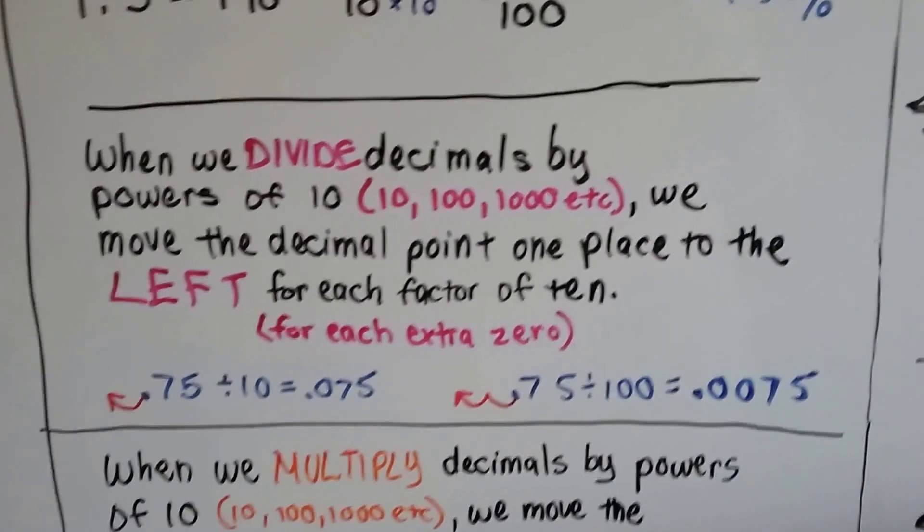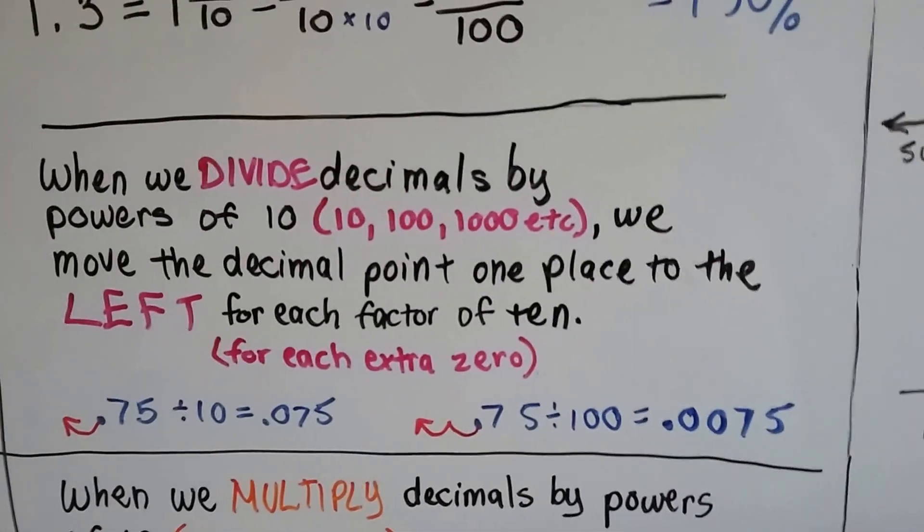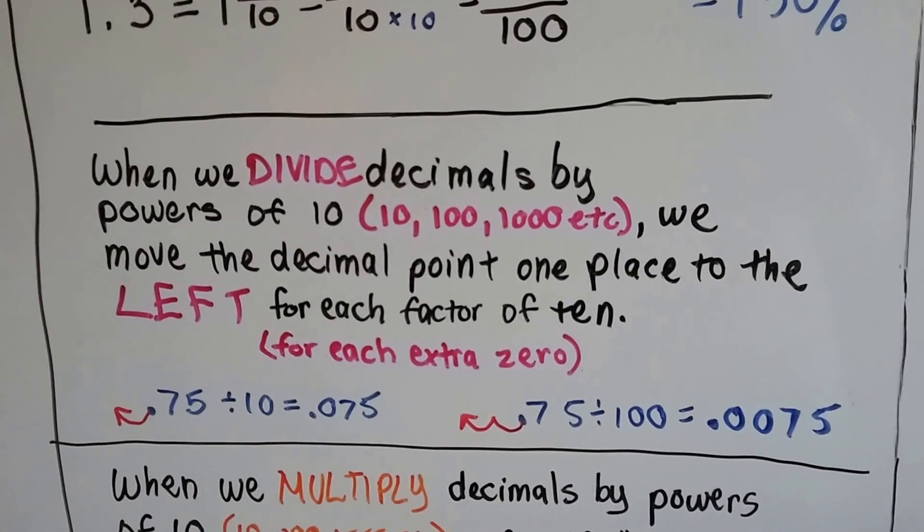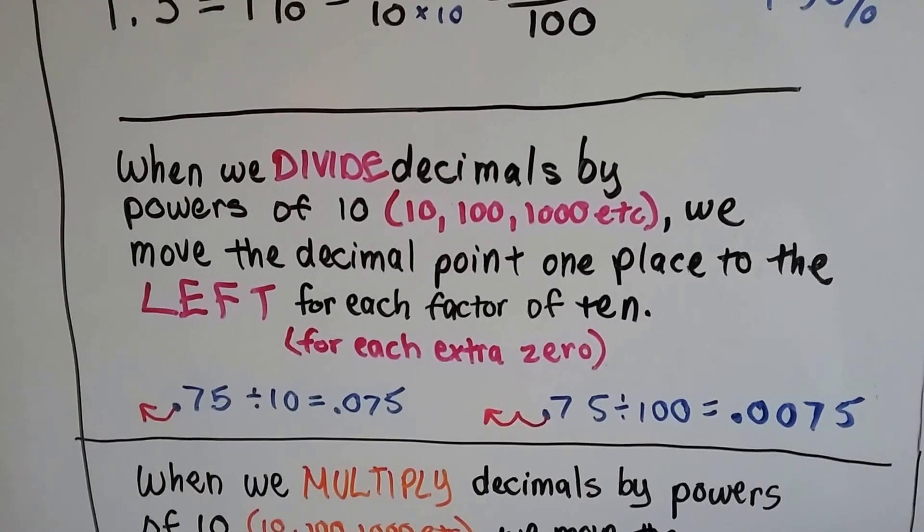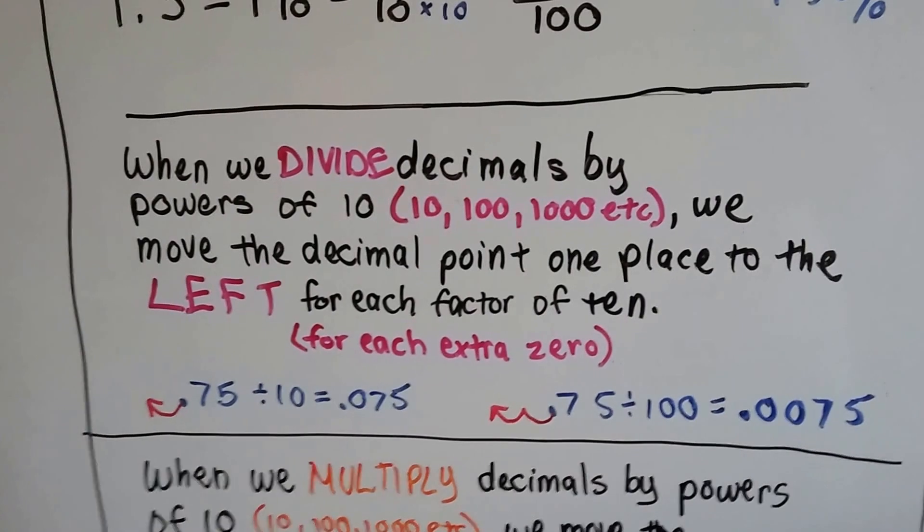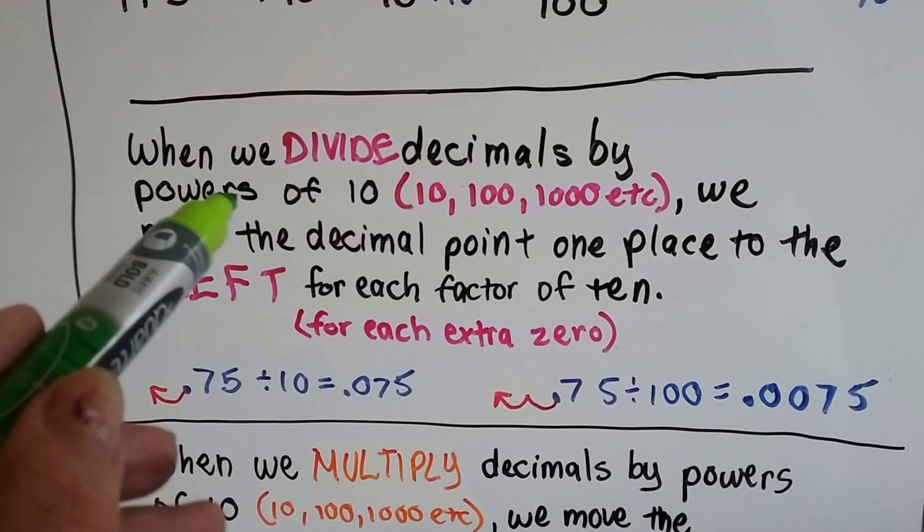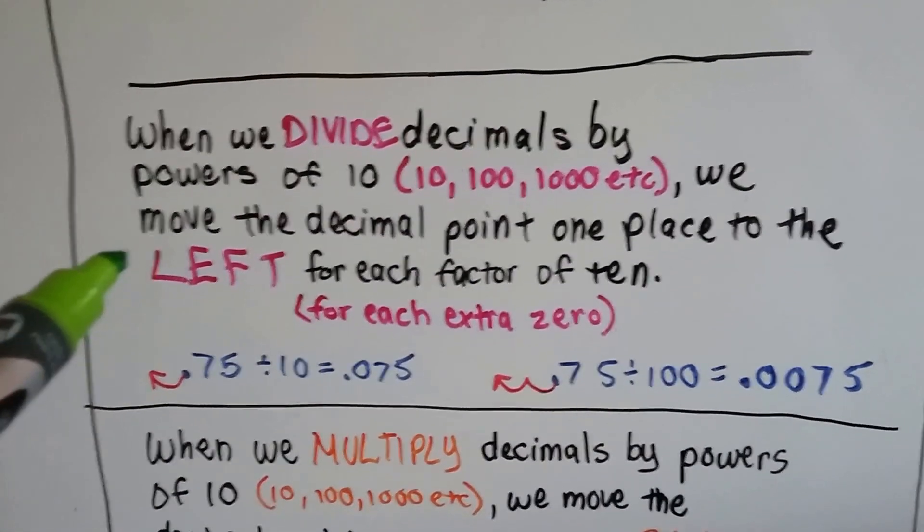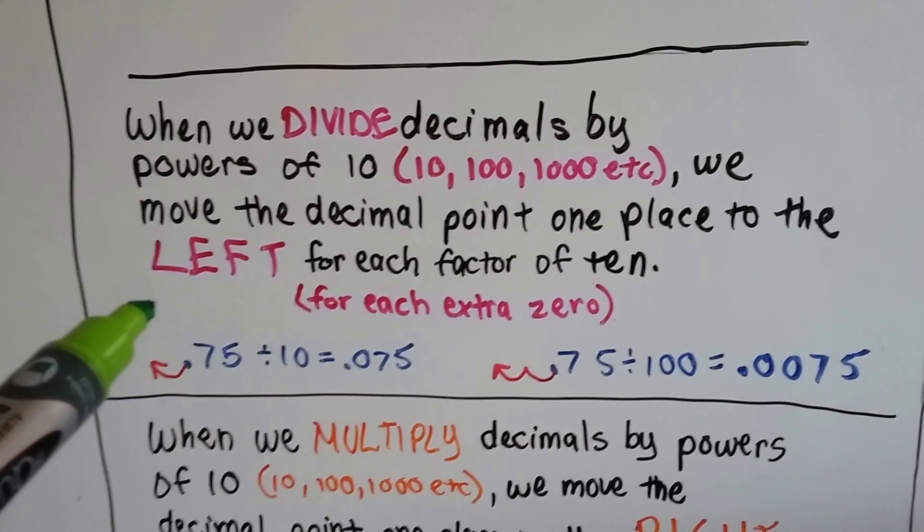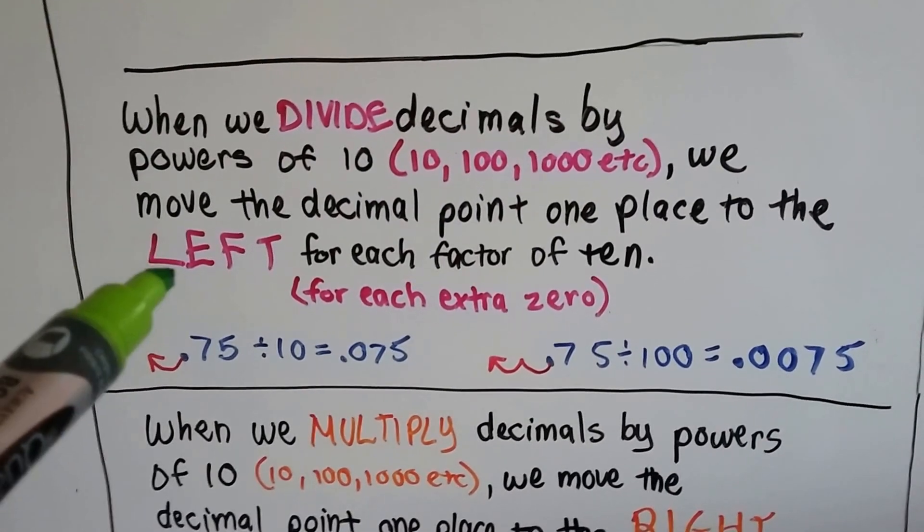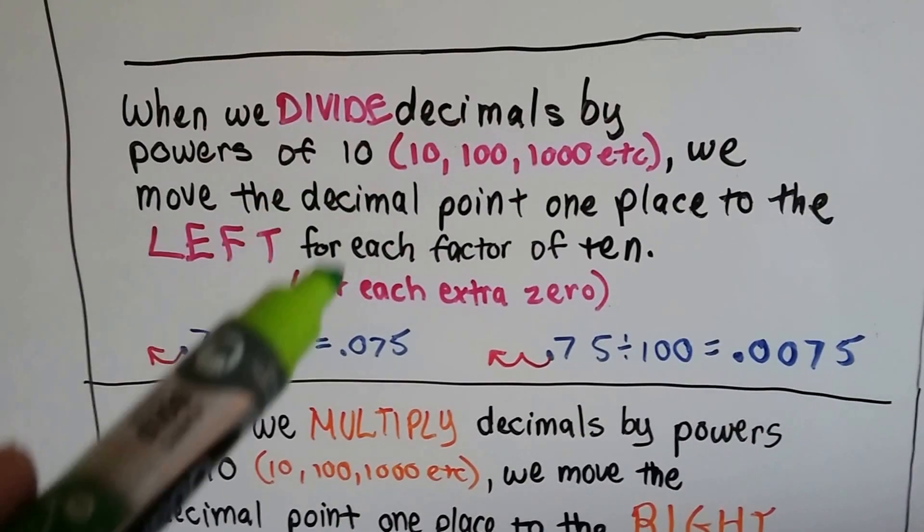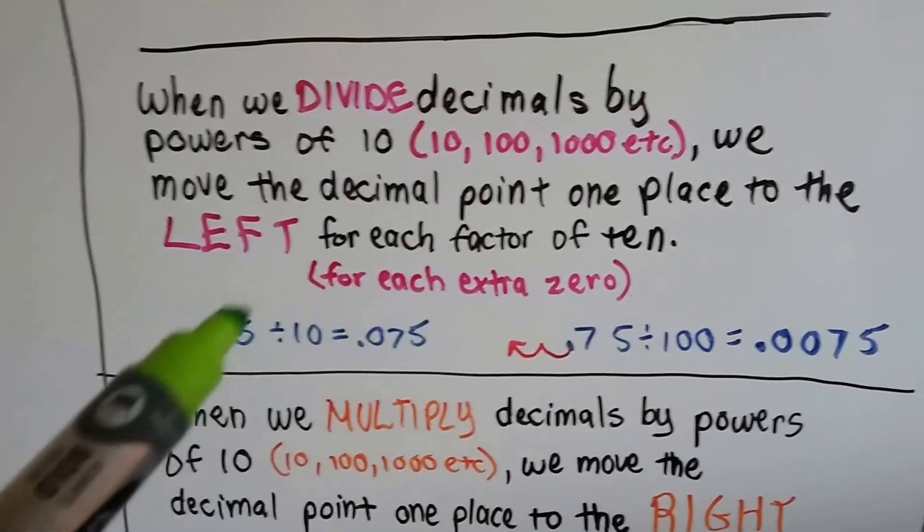So, I said this in the previous video. I just rewrote it so it looked different. When we divide decimals by powers of 10, 10, 100, 1000, etc., those are the powers of 10. We move the decimal point one place to the left for each factor of 10, for each power of 10, for each extra zero.